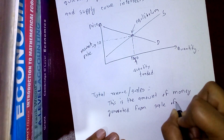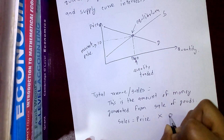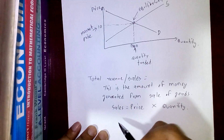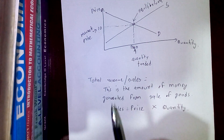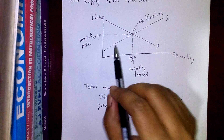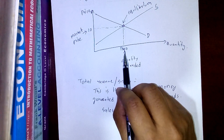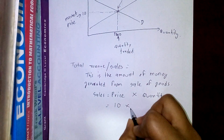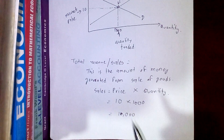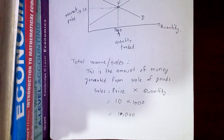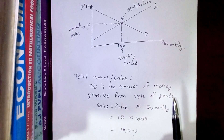Another concept I'm going to show you is total revenue or sales. This is basically the amount of money generated from the sale of output. For example, if the price of the product you're selling is 10 bucks and you're selling only one product, then your total sales will be 10 × 1, which is 10.